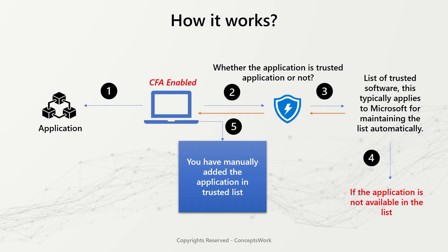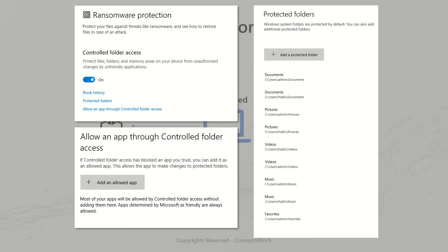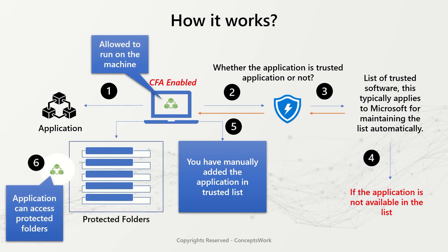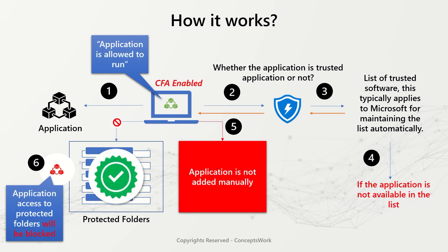If you have added the application manually — as shown in the setting snip referenced earlier — the application is again allowed to run and access to protected folders is granted. In the third scenario, where the application is not in the list and not added manually as a trusted application, even if the application is allowed to run, the moment it tries to access any of the protected folders, that access is blocked.